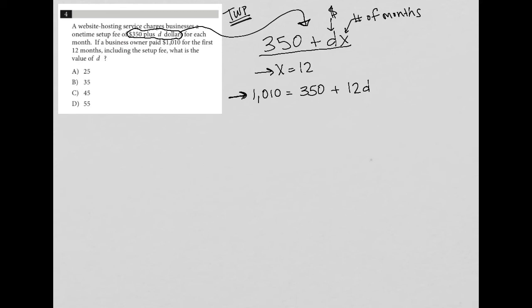So to solve for D, we're going to just subtract $350 from both sides. Don't forget, this is the calculator section. So it is okay to use your calculator.